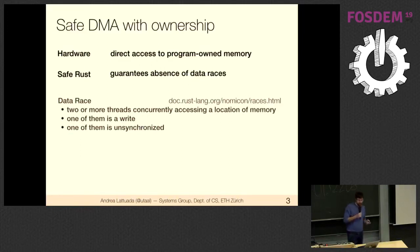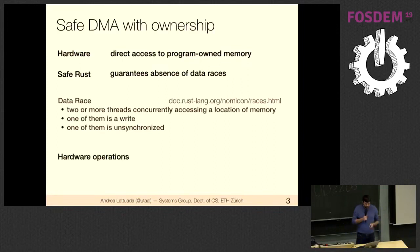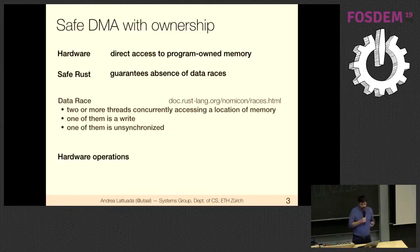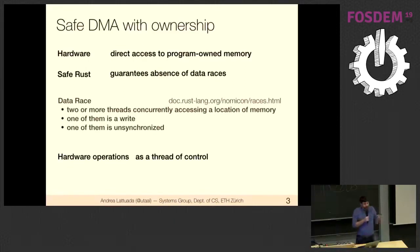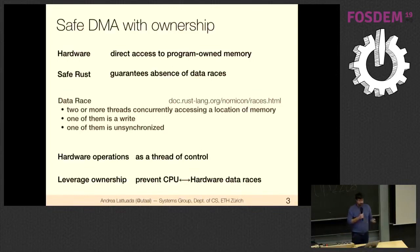The situation is even scarier than two threads racing — we're talking about a CPU thread and a piece of hardware, a network controller, that can directly access memory independently of the CPU. The key insight is to think of hardware operations as a thread of control, as if there were another thread on the CPU, and then use Rust ownership semantics to make this safer.